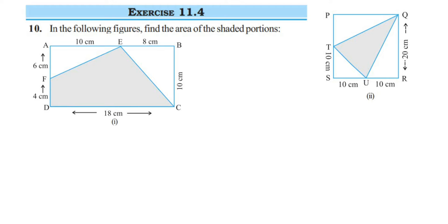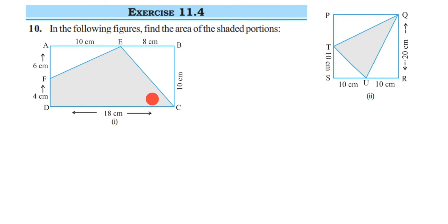Here's a question from exercise 11.4, 10th question — this is the perimeter and area chapter of class 7. The question is: in the following figures, find the area of the shaded portion. They have given two figures. We have to find out the gray colored portion. In this chapter you have learned two formulas about two shapes: rectangle and triangle.